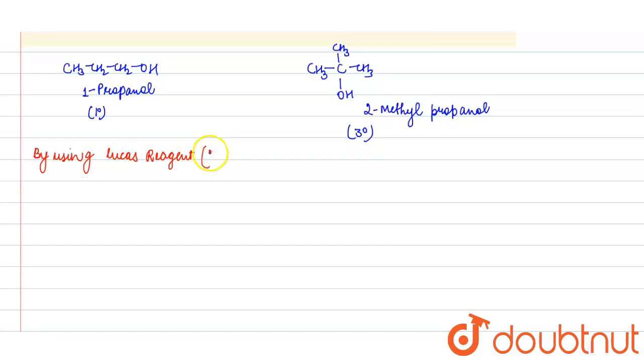What is Lucas reagent? It is a solution of ZnCl2 plus HCl. Your tertiary alcohol immediately forms turbidity.